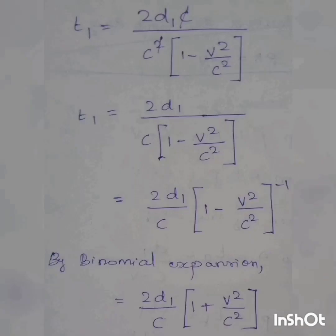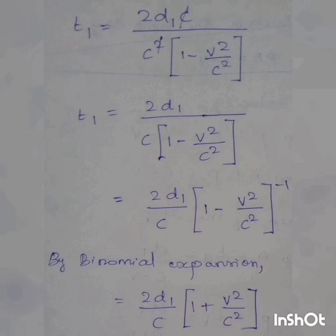So, c squared minus c squared. C is easier to cancel. So, 2d1 by c into 1 minus v squared by c squared. So, 1 minus v squared by c squared — this is right now the expansion. c squared minus v squared by c squared, giving 2d1 by c times 1 plus v squared by c squared.